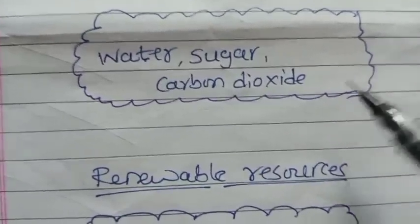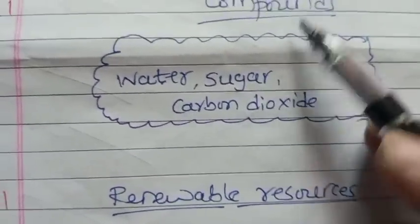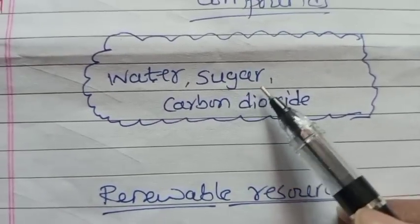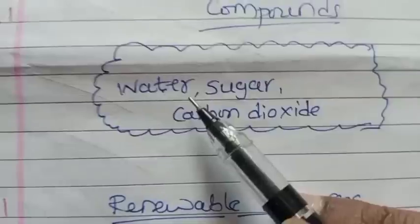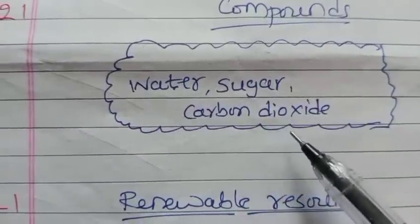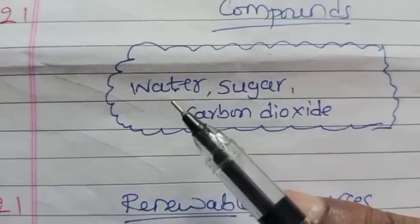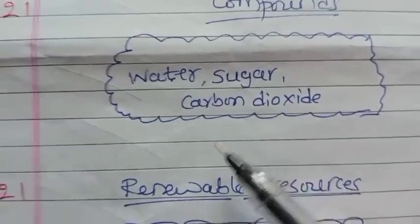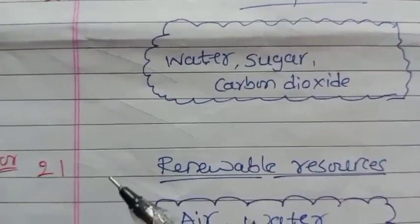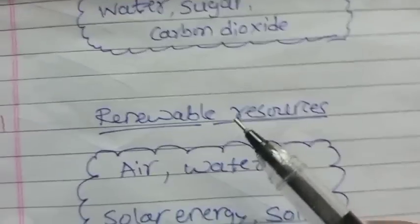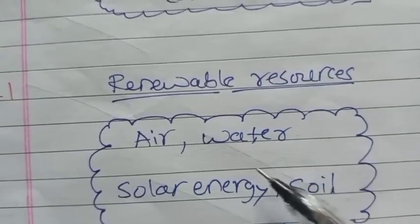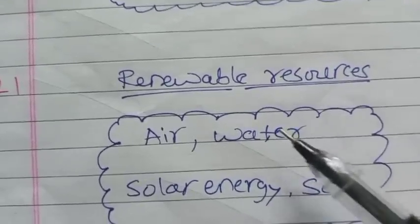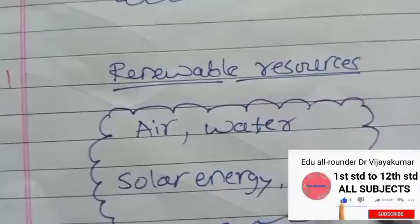This is the second question. The compounds are: water, sugar, and carbon dioxide. The answer to the 21st question on renewable resources is: air, water, solar energy, and soil — these are the renewable resources.